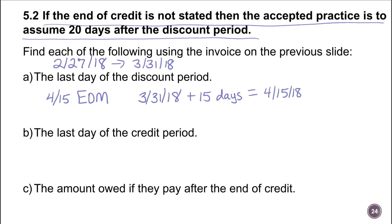The last day of the credit period — this is where we add on the extra 20 days, and this is just an understood thing you have to realize when it doesn't say anything about net. So 'net in 60' or 'net in 45' — this one didn't say anything about that. So we're going to take 4/15, which was the end of our discount period, add another 20 days, and that will put us on May 5th, 2018.